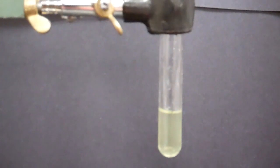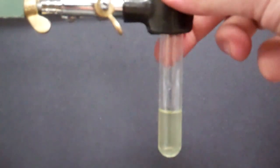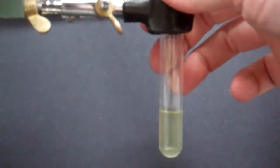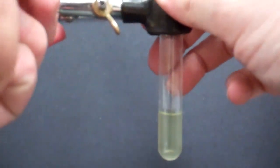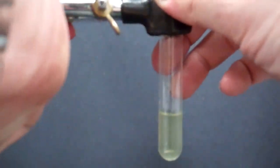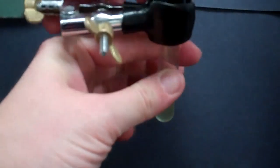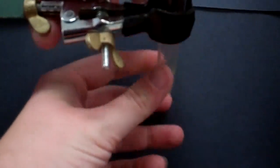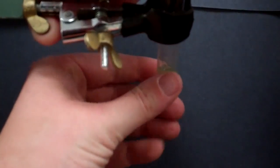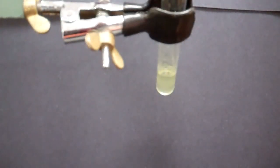This next part, we need to tilt the test tube on its side. When you are doing these anions tests, you want to be sure that you're using your test tube tongs to hold these test tubes. You should not be holding any of these test tubes with your bare hands.